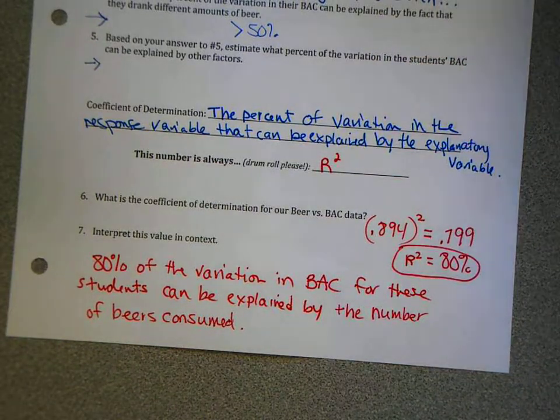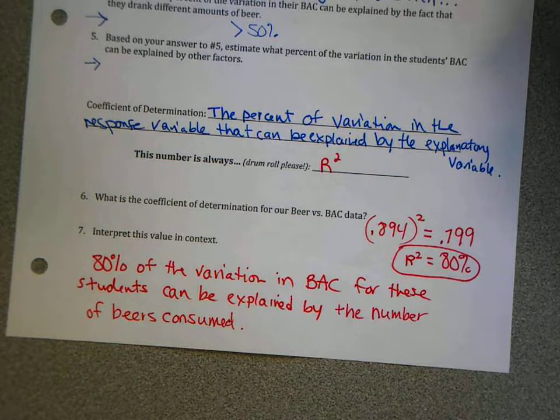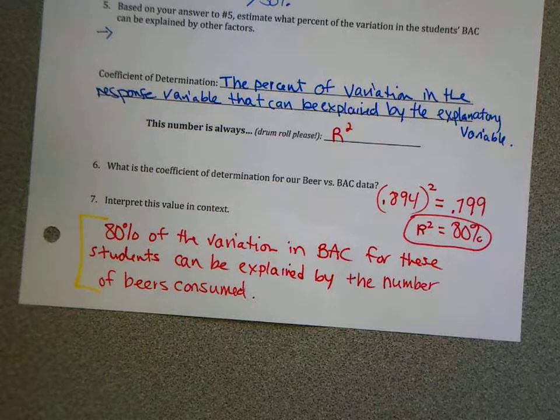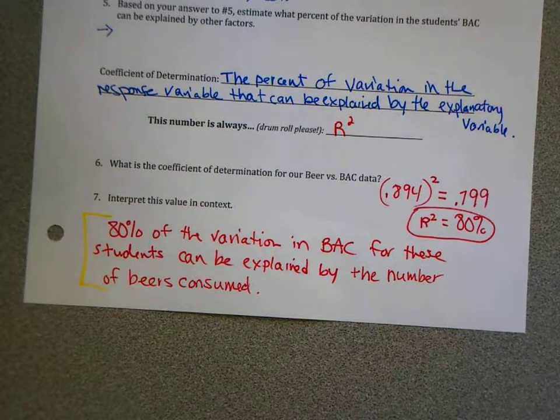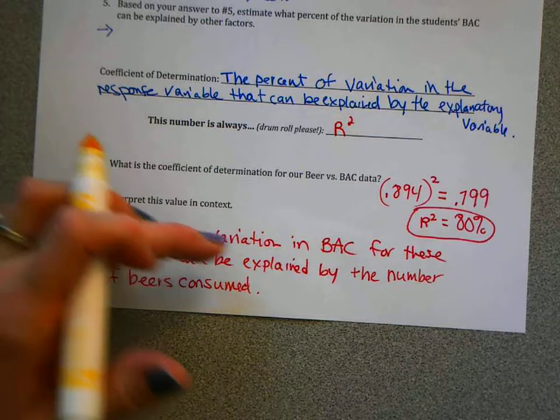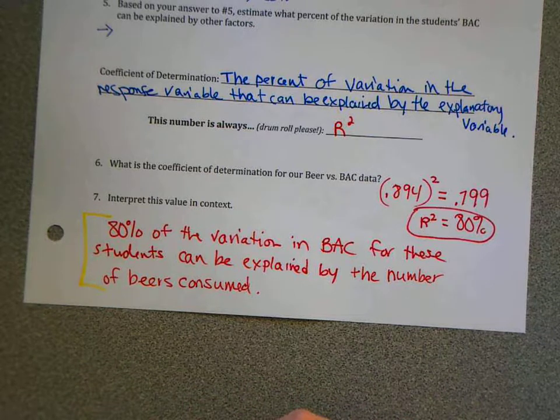Oh, it's not your bell. That was my bell. Super important sentence you want to use as a model. I ask you to interpret R squared. So please do you have that written down very carefully. 80% of the variation in blood alcohol content for these students can be explained by the number of beers consumed.